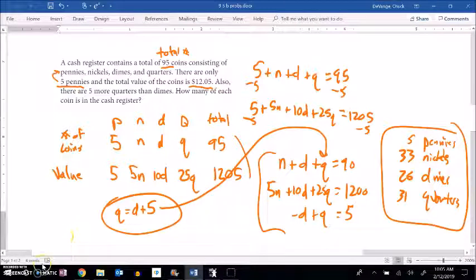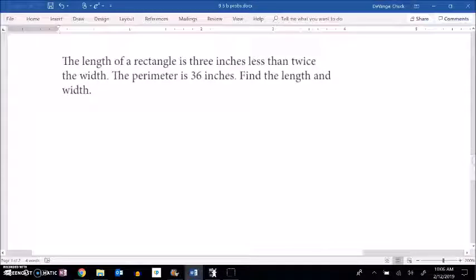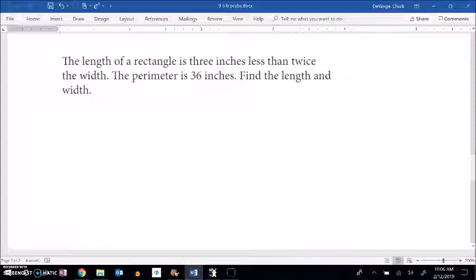Well, let's go ahead and do one more problem. And I don't know if I can take another coins problem. Oh, what a relief. The length of a rectangle is three inches less than twice the width. The perimeter is 36 inches. Find the length and width.